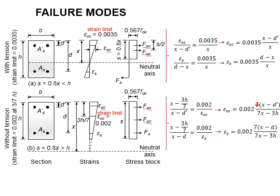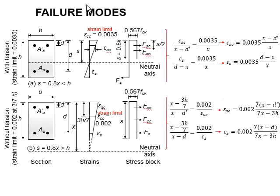With the known position of the neutral axis, we are able to determine the compression steel strength in the columns.